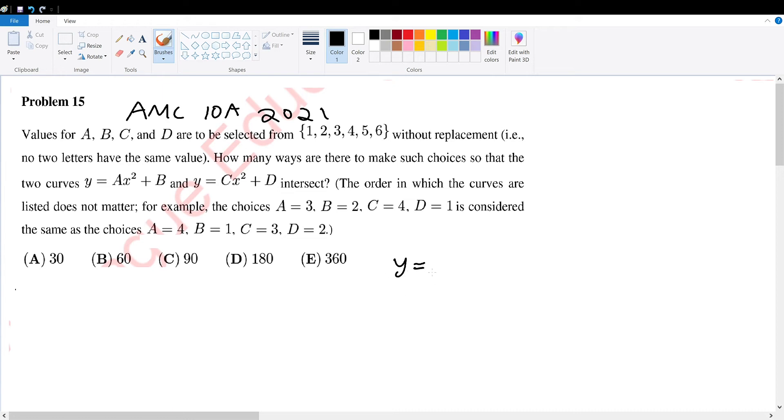First of all, how can we say that y equals ax squared plus b and y equals cx squared plus d, the two of them will intersect? Well, if the two of them will intersect, that means they must intersect at the same point, so one of their x and y values must be the same. Therefore, ax squared plus b must equal cx squared plus d at some point.